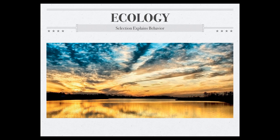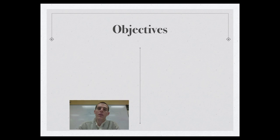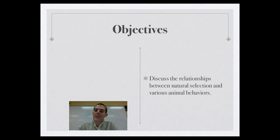Good morning, everybody. Welcome to another edition of the Lab 207 webcast. My name is Mr. Kite, and I'll be hanging out with you today as we continue on in our series on ecology. The topic for the day is going to be the intersection between natural selection and animal behavior. By the end of this video, be able to discuss the relationships between natural selection and various animal behaviors.